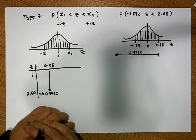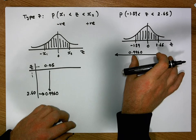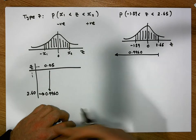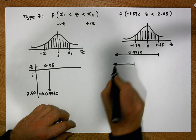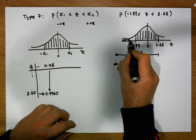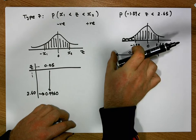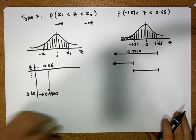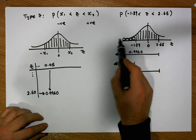Let's think about this from a problem-solving perspective. We only want the area in between these two values. We know the area from 2.65 down to negative infinity. If we also knew the area in the left tail below minus 1.39, then we could simply take the shorter line away from the longer line, which gives us the area in between. So we need to figure out the area in the left tail.